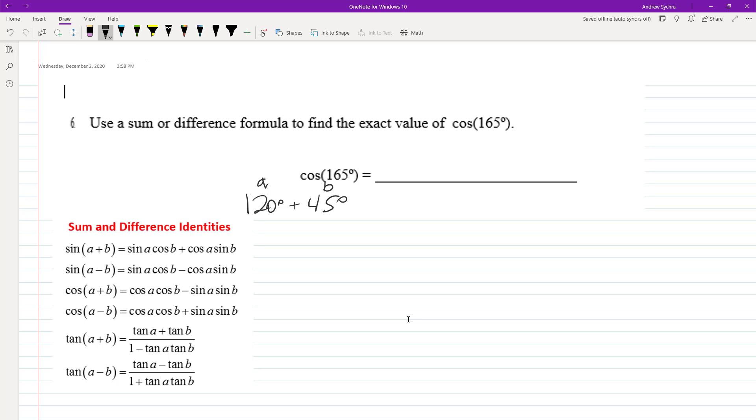We're going to use this formula here: cosine of 120 times cosine of 45 minus sine of 120 times sine of 45.